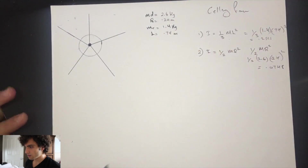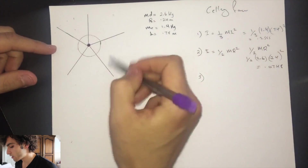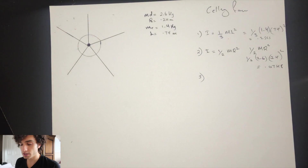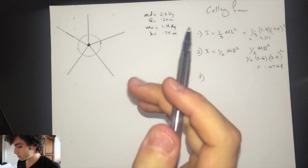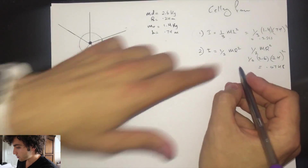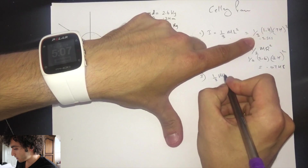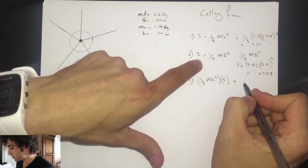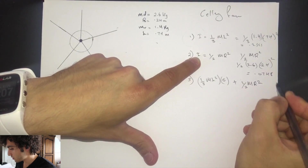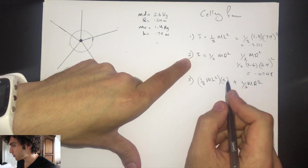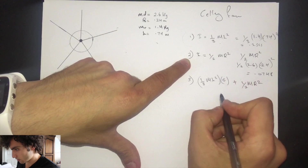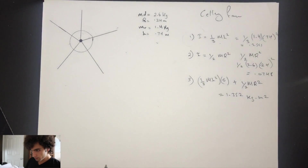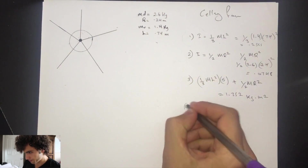The third question asks for the moment of inertia of the whole ceiling fan. We have five rods, and since the axis is at the end of each rod — not the middle, because that would give a different moment of inertia — we multiply the rod formula by five. So the total inertia is 5 × (1/3 ML²) plus (1/2 MR²). For my values, the total was 1.352.